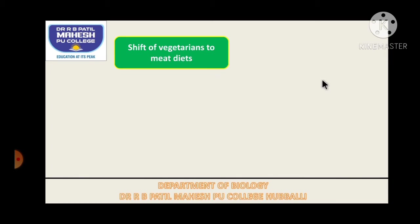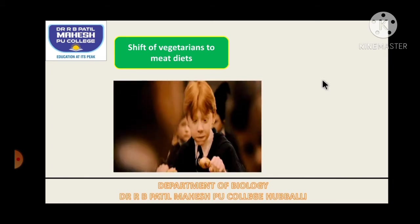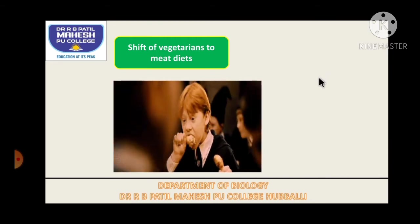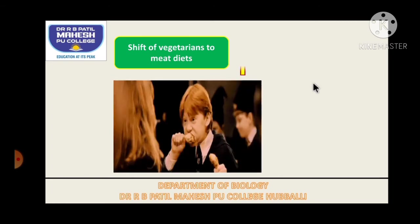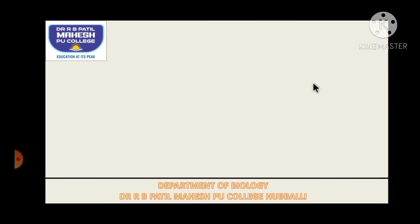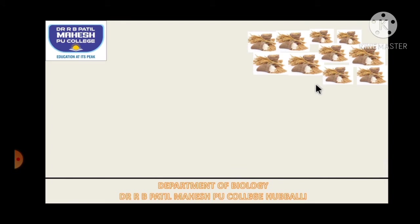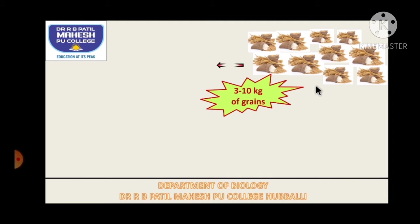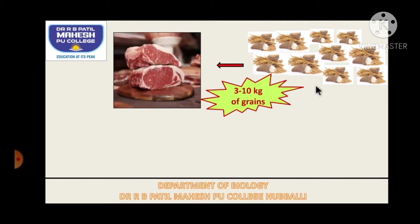Thus there is a shift in food habits from vegetarian to non-vegetarian. Many people have shifted from vegetable food to a meat diet to fulfill this mineral deficiency. Demand for cereals has increased, but people have shifted to non-vegetarian food. Three to ten kilograms of grains — which contain minerals and nutrients — will be equal to only one kilogram of meat.